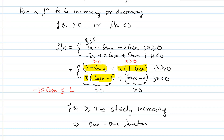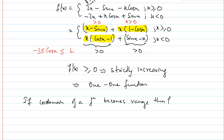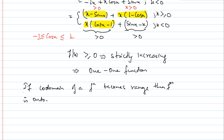तो अब हमें देखना है कि function onto होगा या into होगा। Function onto हो, इसके लिए: if co-domain of a function becomes range, then function is onto। अगर एक function का co-domain range बन जाता है तो function onto बन जाता है। तो हमें check करना है कि क्या पूरा co-domain range बन गया है।